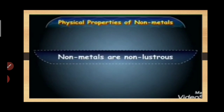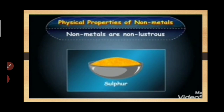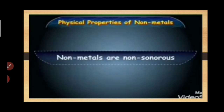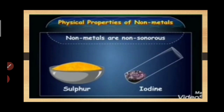Nonmetals are nonlustrous, meaning they don't shine. For example, sulphur — but nonmetals like iodine and graphite are exceptions; they do shine. Nonmetals are also nonsonorous — they don't produce sound when beaten, for example sulphur and iodine.